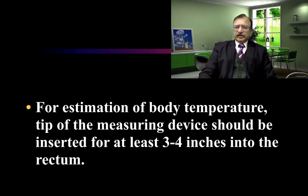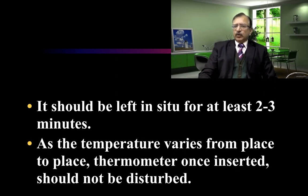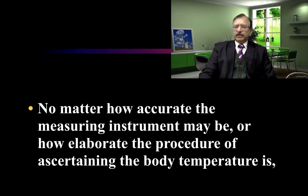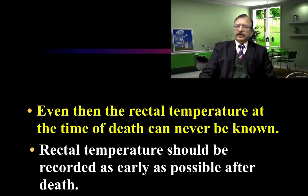For recording of temperature and estimation of body temperature, the tip of the measuring device should be inserted at least 3 to 4 inches into the rectum. As temperature varies from place to place, the thermometer once inserted should not be disturbed. At least 4 readings are taken at about half-hour intervals so as to determine the rate of cooling. No matter how accurate the measuring instrument may be, the rectal temperature at the time of death can never be precisely known, so the rectal temperature should be recorded as early as the body is received or at the time of death.